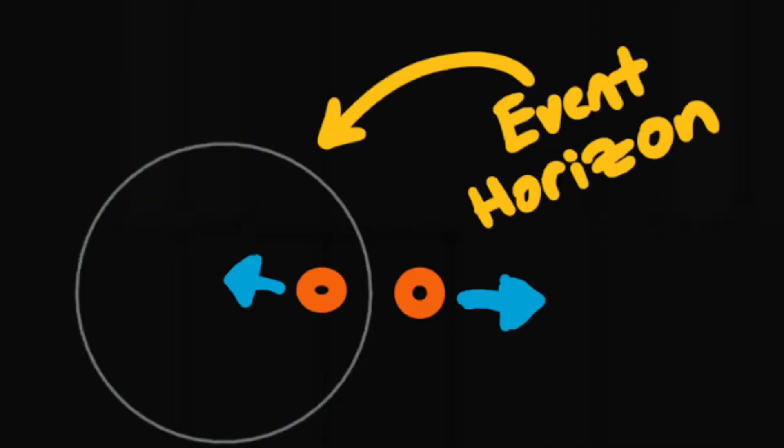The crew also had to be careful to avoid the event horizon, otherwise known as the Schwarzschild radius, which is where the escape velocity of the black hole equals the speed of light — otherwise known as the point of no return.